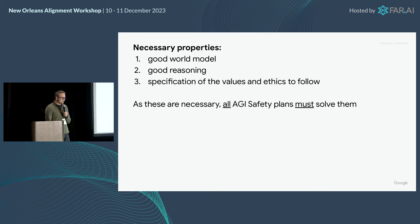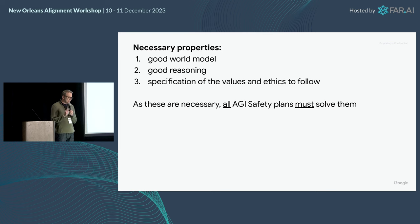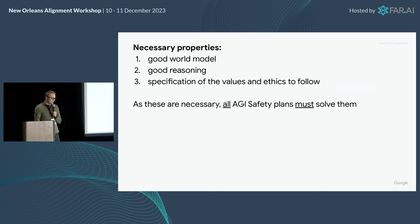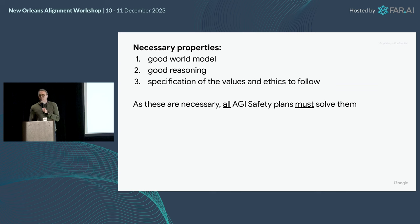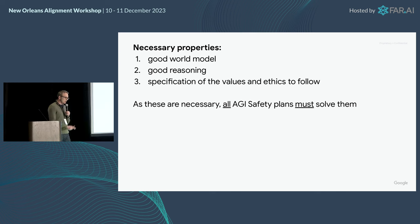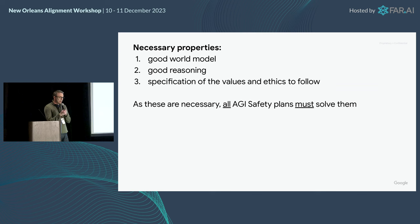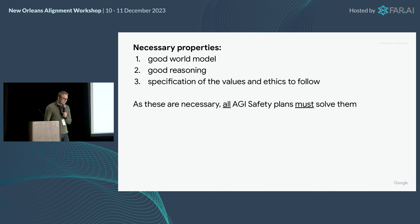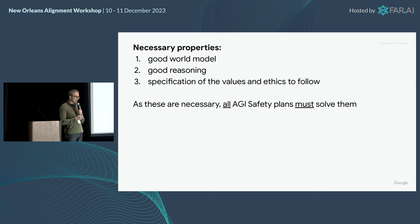So we have three necessary properties: a good world model, good reasoning, and specification of the values and ethics we want the agent to follow. Properties one and two are both capabilities, so there's no separating capabilities from safety — they're very intertwined. A safe system has to be a very capable system. And on the third point, in order for the agent to understand values and ethics, that's also a capability. If you believe these are necessary, then all AGI safety plans must solve these problems — you can't get around them.